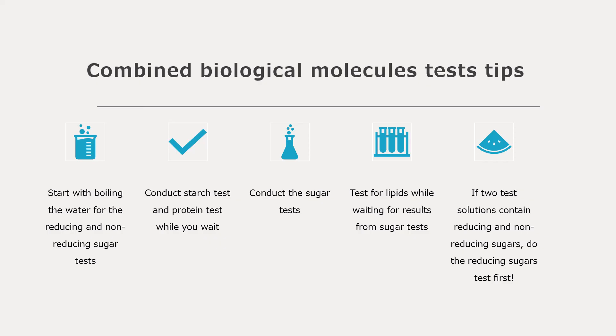If you are doing a combined biological molecules test where you have to test for everything, make sure you conduct the starch test and the protein test while you're waiting for the water to boil. These two are really quick — you don't need to add any heat, just add the reagents together and observe a quick color change. And obviously by the time you're done with those two, your water should be boiling. So then you can do the sugar tests for reducing and non-reducing, and you can also test for lipids while waiting for the sugar test, because after you put the test tube into the hot water you have to wait five minutes — and in those five minutes you can do the lipids test.